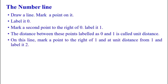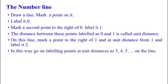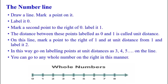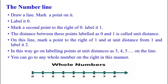On this line, mark a point to the right of 1 at unit distance from 1 and label it 2. In this way, go on labeling points at unit distances as 3, 4, 5, and so on. You can go to any whole number on the right in this manner. This is the number line for whole numbers.